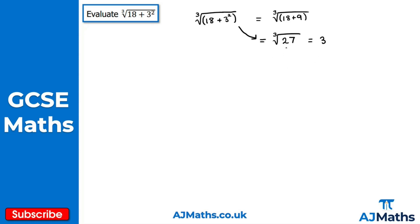So the cube root of 27 is equal to 3, meaning the cube root of 18 plus 3 squared equals 3. That's our solution to question two and brings us to the end of this video on an introduction to powers and roots. In the next video we'll take a look at exam revision for powers and roots.